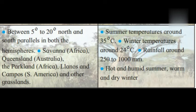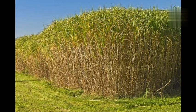Summer temperatures are around 35 degree Celsius and winter temperatures around 24 degree Celsius. Rainfall is around 250 to 1000 millimeter. The climate is hot and humid in summer and warm and dry in winter. Natural vegetation includes tall and thick grass with a height of around 6 meters, called elephant grass.